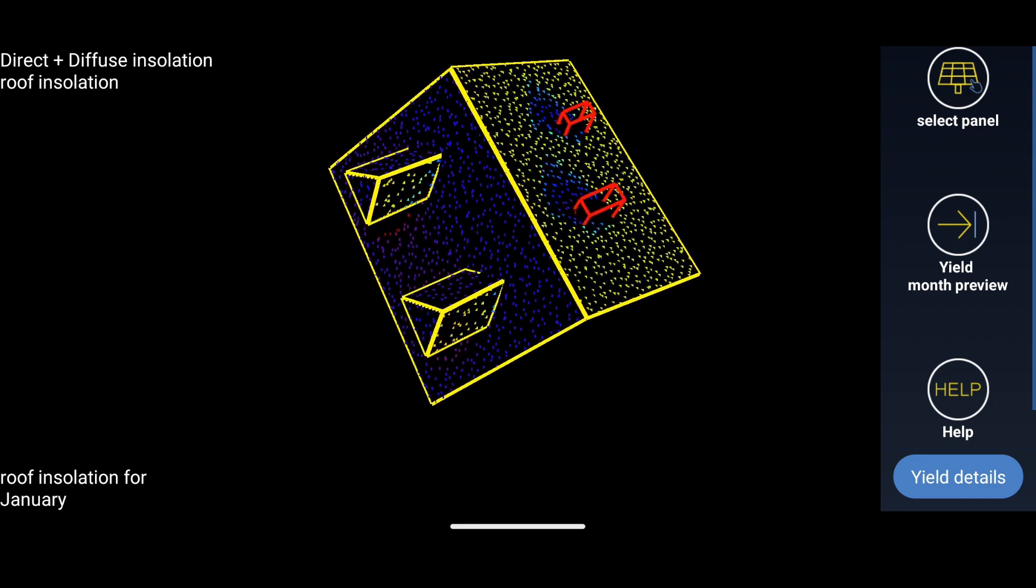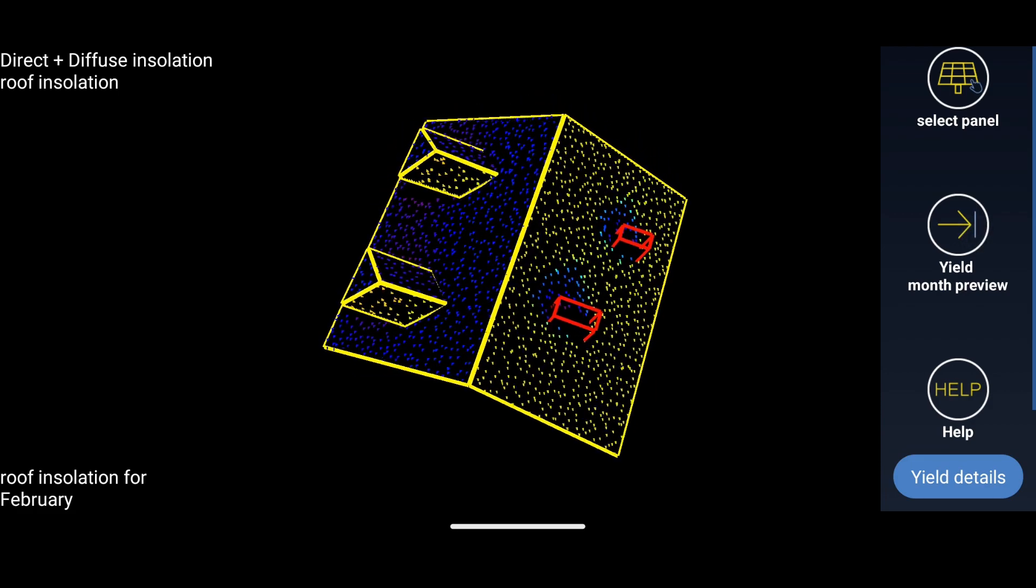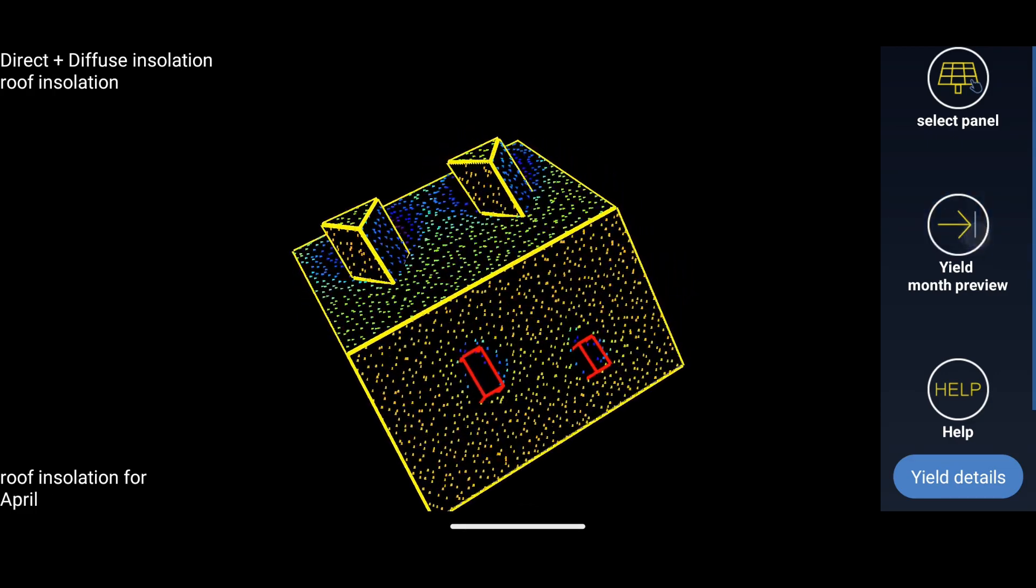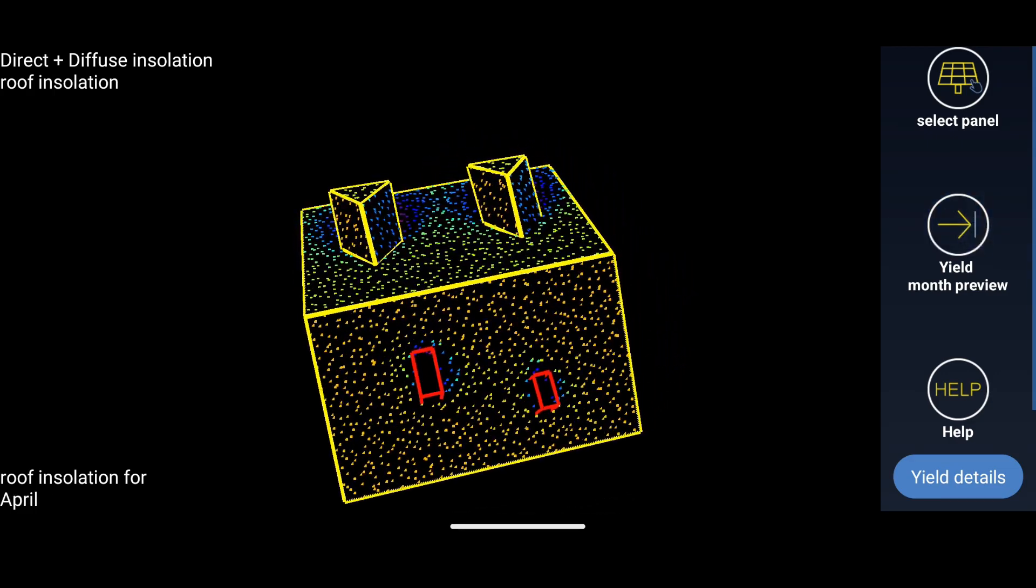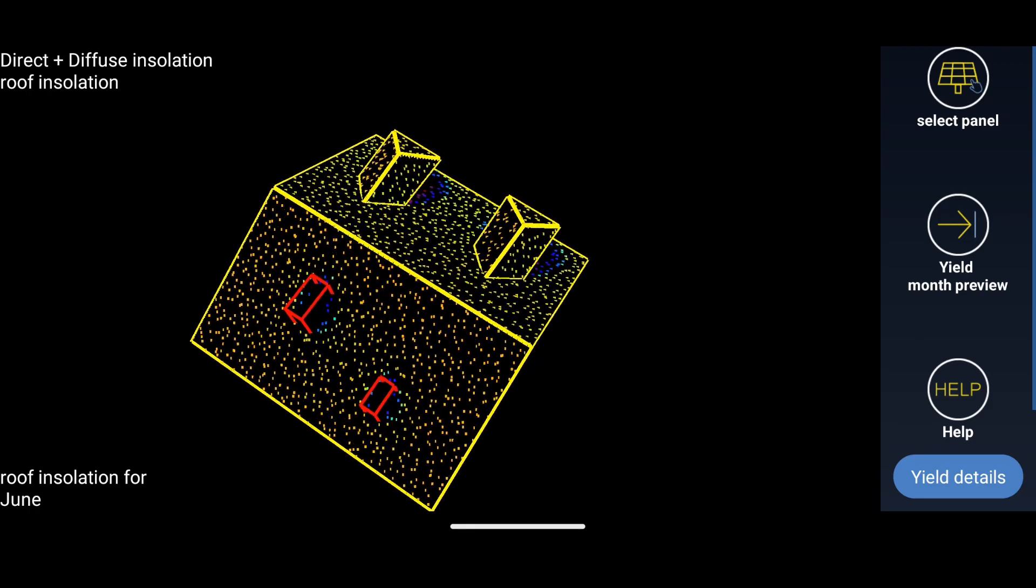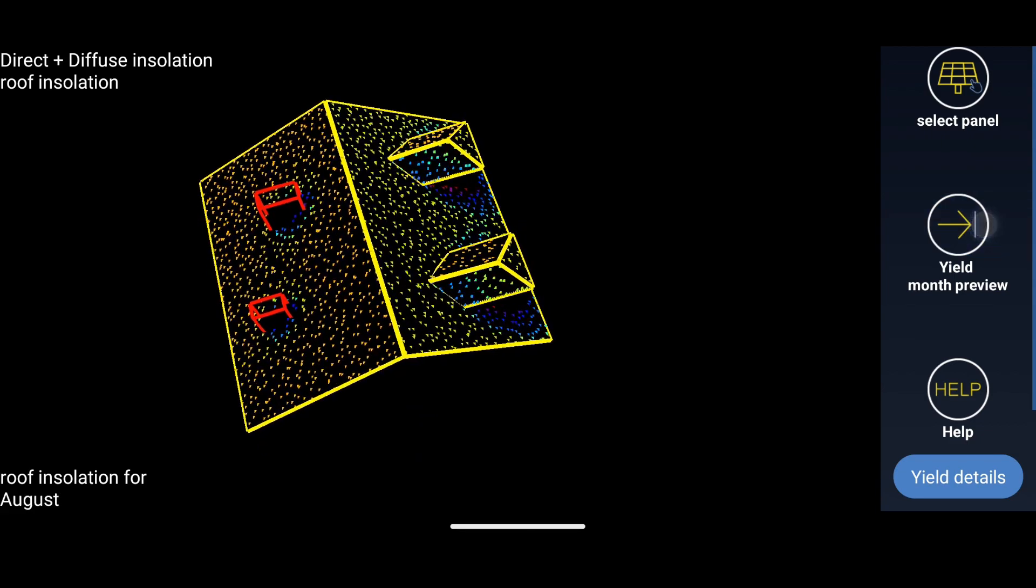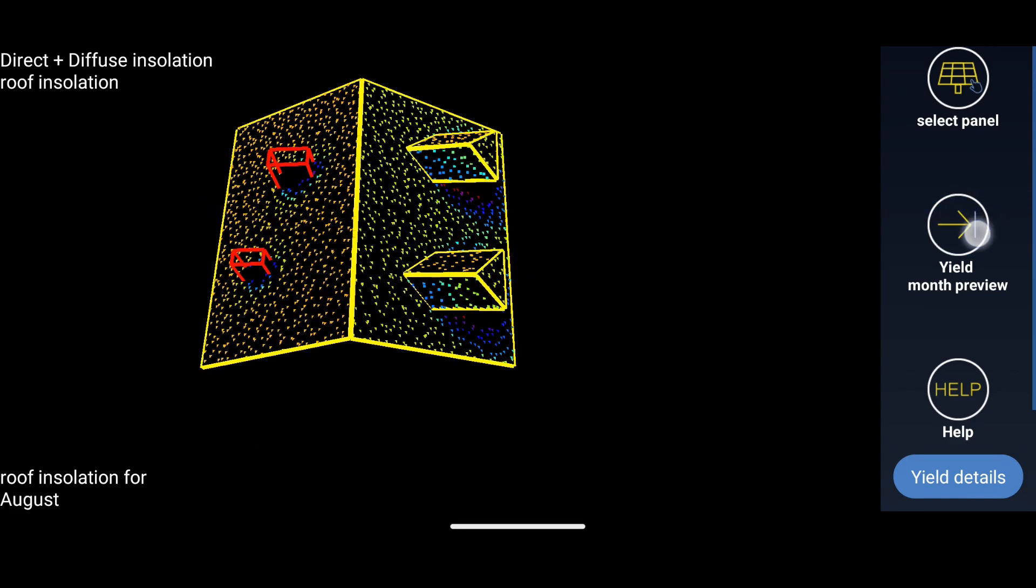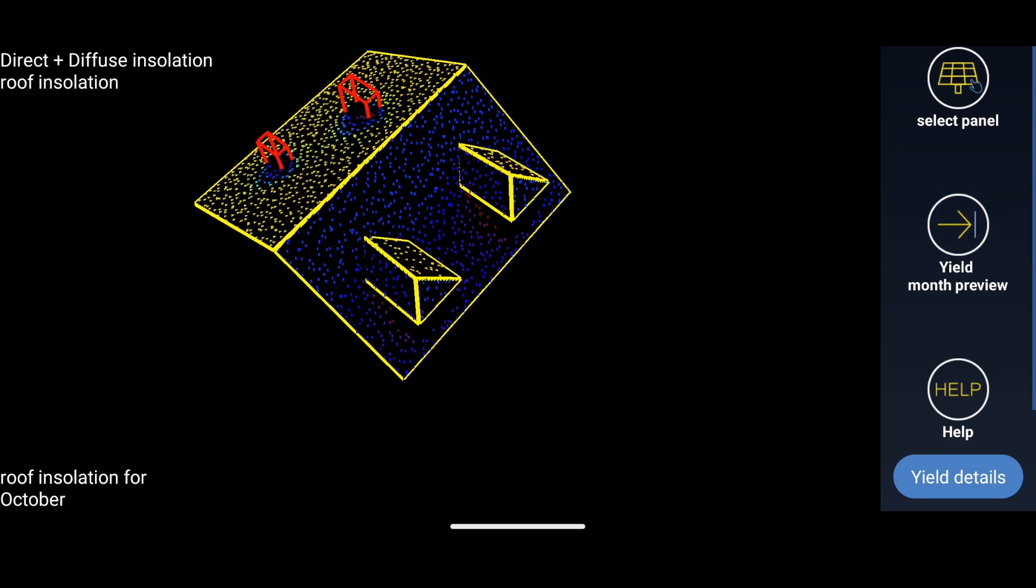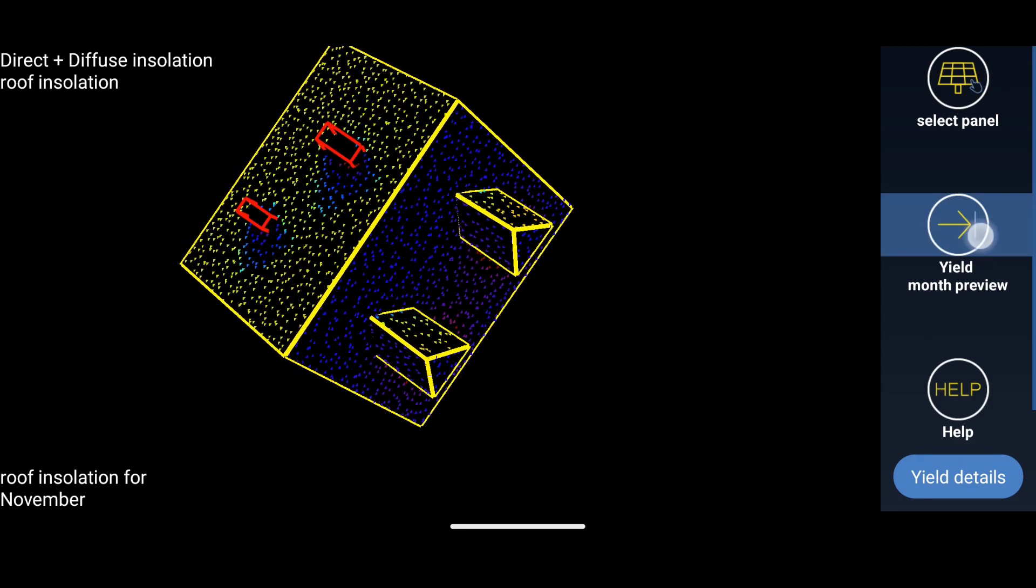Tap yield month preview button to see data for remaining months. February, March, April, May, June, July, August, September, October, November, and December.